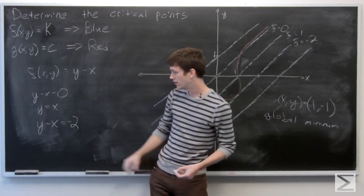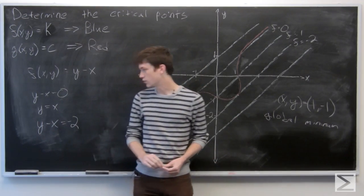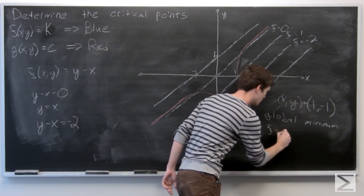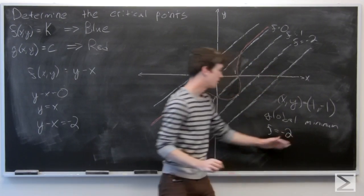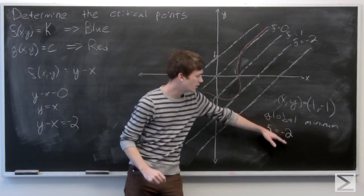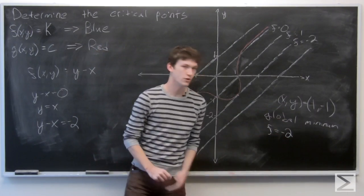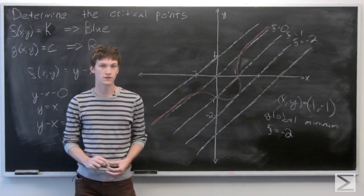And we know that f(x,y) at (1, -1) is equal to negative 2 at that point. So it appears as though we have a global minimum at (1, -1), and our minimum value is negative 2.